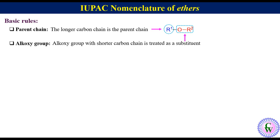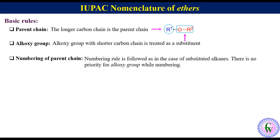Numbering of parent chain: the numbering rule is followed as in the case of substituted alkanes. There is no priority for the alkoxy group while numbering. For the IUPAC name, ethers are named as alkoxyalkane.